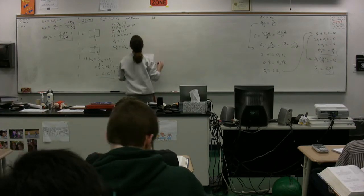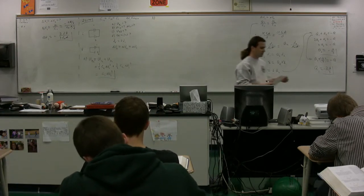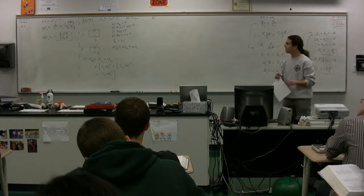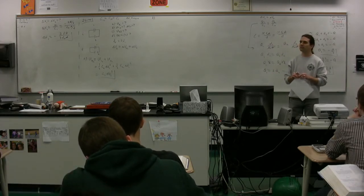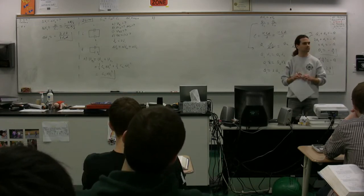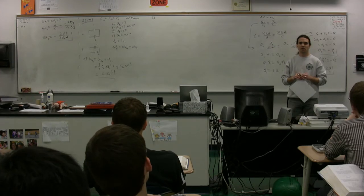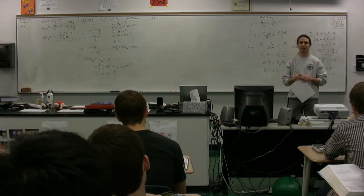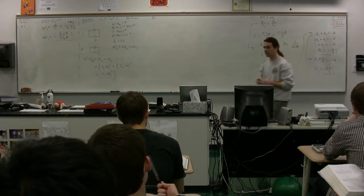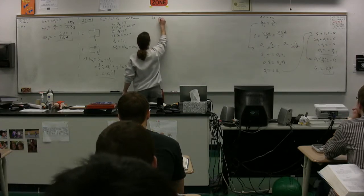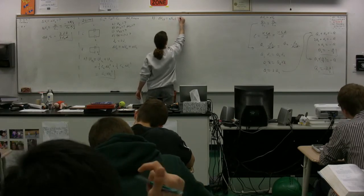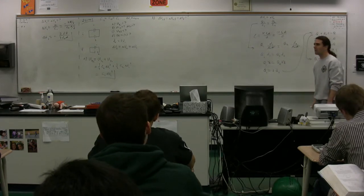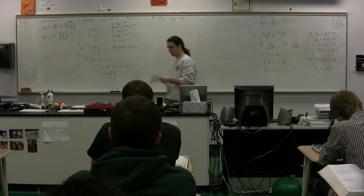Part B asks for the electric potential difference across each capacitor after the plate separation is doubled. After separating the plates of capacitor two, are these two capacitors still in parallel? Yes. Therefore, by definition, the potential difference across capacitor one final equals the potential difference across capacitor two final — we call it ΔV_final, which is what we are solving for.